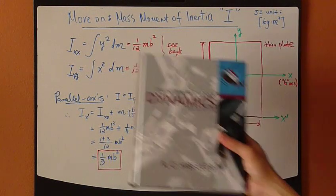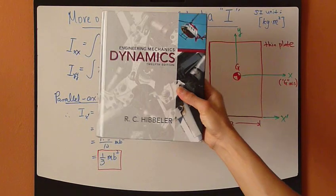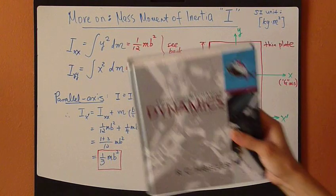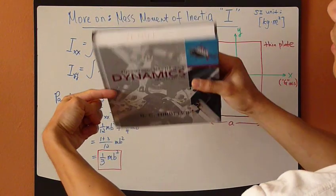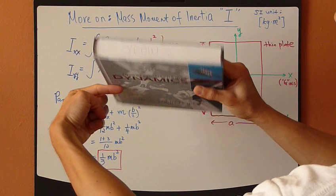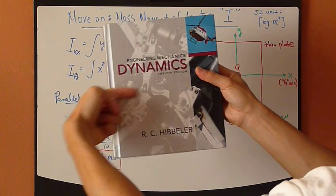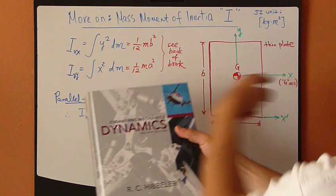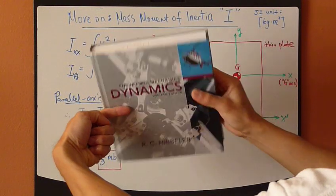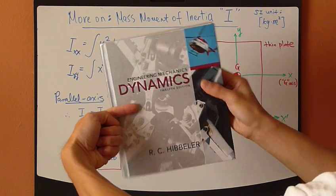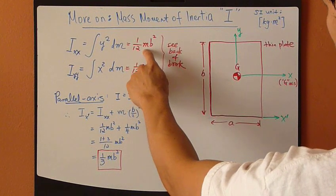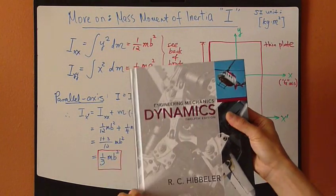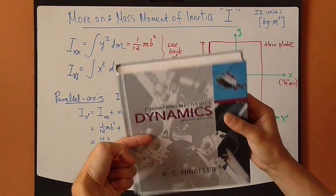So if you were to take something like a book that's thin, if this book was to rotate about its center axis that passes through the center of gravity, this will be our x-axis. So the measure of resistance is quantified by 1/12 mb, as in the height of the book, squared.